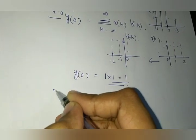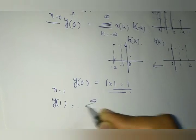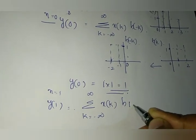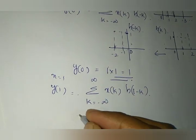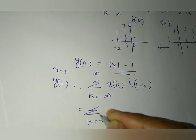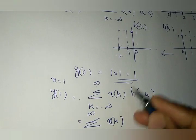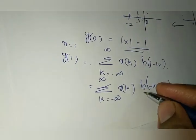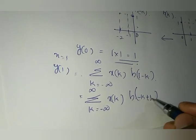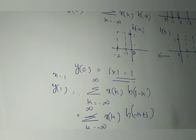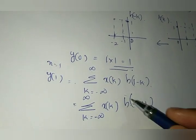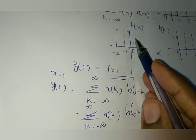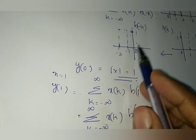Now you have to find y of 1. Here n is 1 and the equation becomes sigma k from minus infinity to infinity of x of k into h of 1 minus k. I can write 1 minus k as minus k plus 1, so I need h of minus k plus 1. To obtain h of minus k plus 1 from h of minus k, you simply add 1 to the time points of h of minus k.